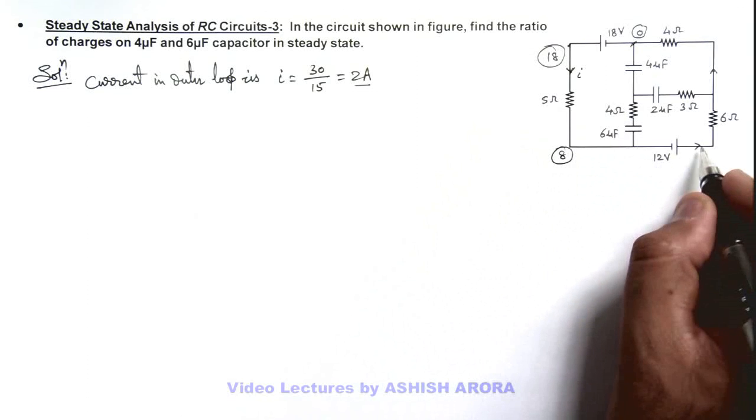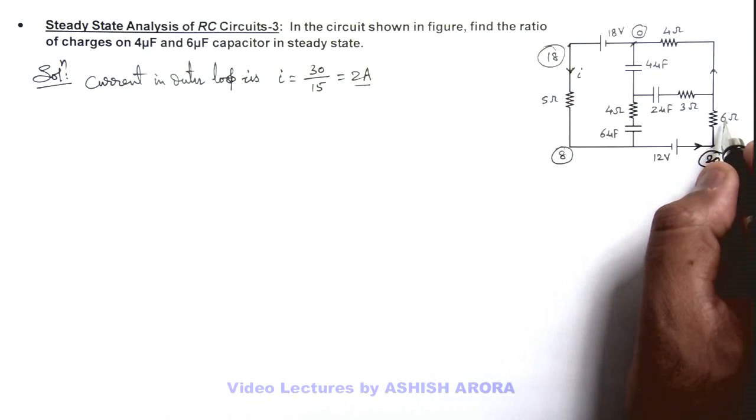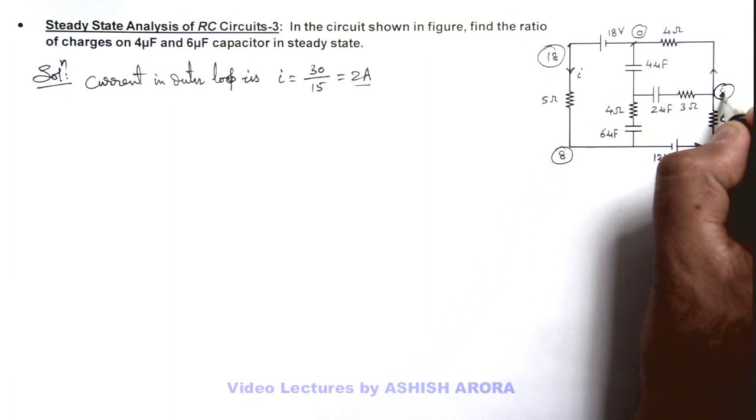Here again 12 volts will be added so here potential will be 20 volts. And again 2 ampere current passes through 6 ohm resistance. So potential drop here will be 6 into 2, 12. And 20 minus 12, here potential is again 8 volts.